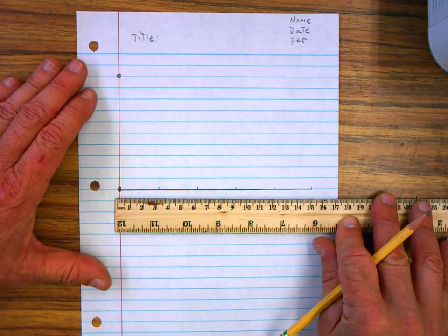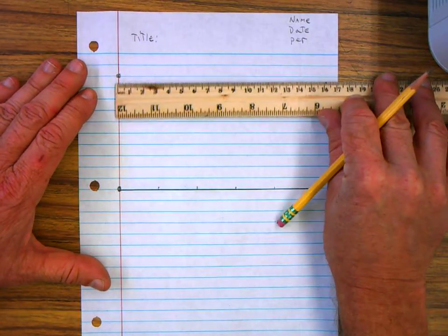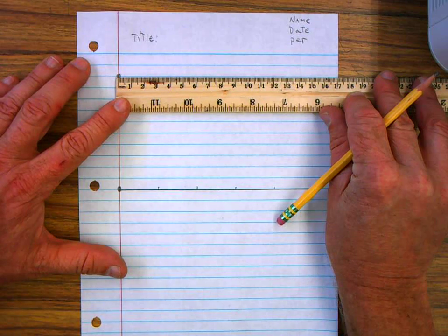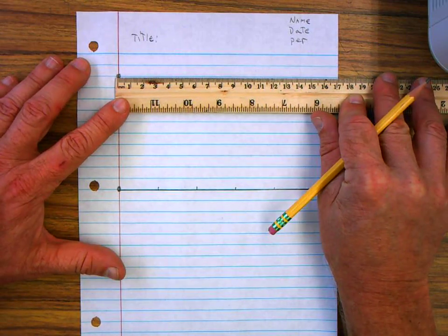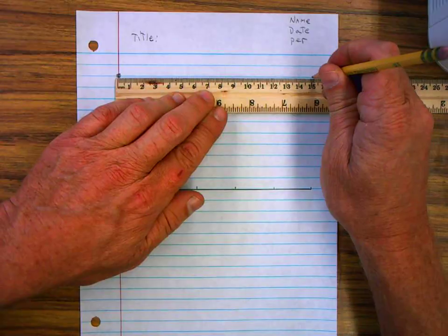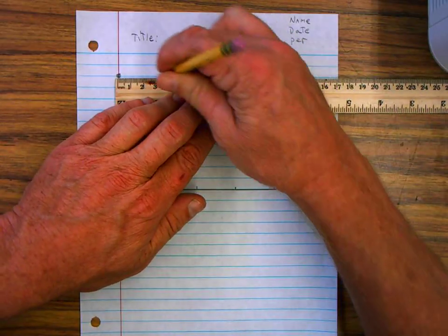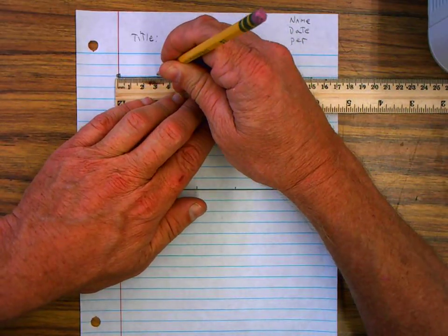Then you're going to go up to the top line, and you're going to do exactly the same thing. You put the zero point on the red margin, and you're going to draw a fifteen centimeter line, and mark it every three centimeters.